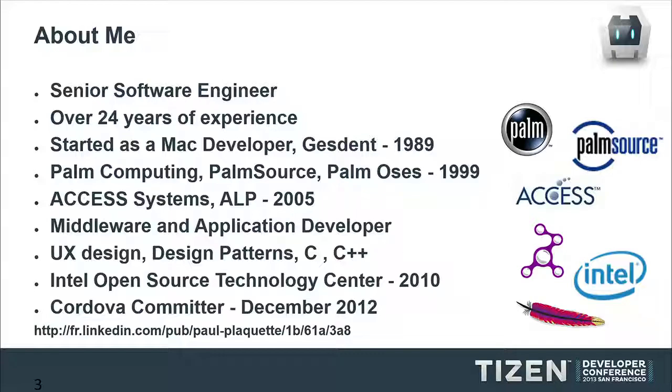After that I worked for a Japanese company called Access Systems where we developed Access Linux platforms. I am mostly a middleware and application developer involved in UX design, design patterns, C, C++, and so on. Since 2010 I started to work at Intel Open Source Technology Center, first on Meego, then on Tizen, and I became a Cordova committer last December.